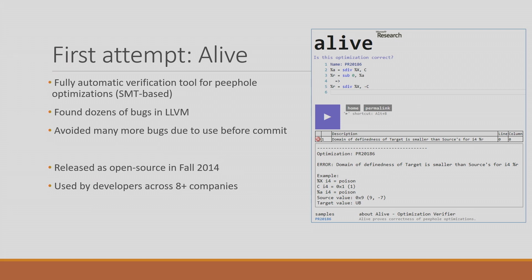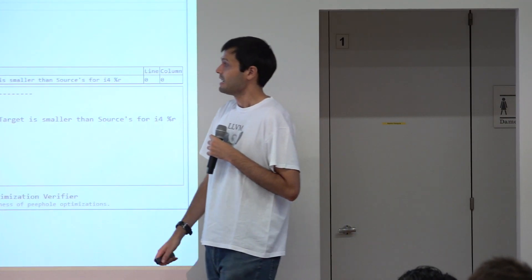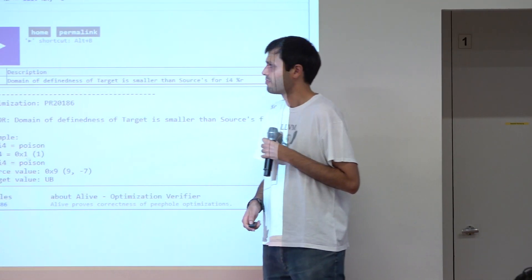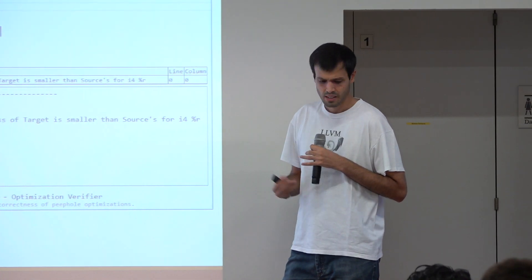Our first attempt was a tool called Alive. It was a fully automatic tool with a DSL where you could write your optimizations. The DSL is almost the same as LLVM IR, so the learning curve for LLVM developers was pretty low — they just needed to add an arrow separator. You click the play button and it says correct, not correct, or whatever. It found quite a few dozen bugs and was used by a bunch of companies.